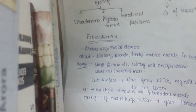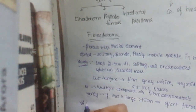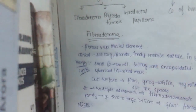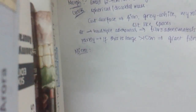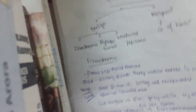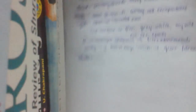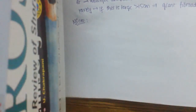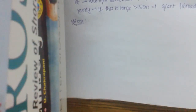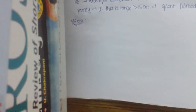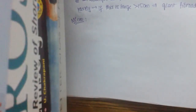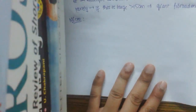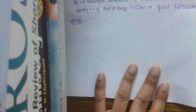Very rarely, if the adenoma is large — up to 15 centimeters — it is called a giant fibroadenoma. Those were the gross features. Now let us discuss the microscopic features of fibroadenoma. I will draw a simple diagram as I do in all classes.